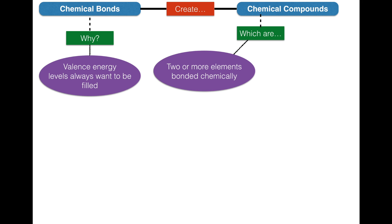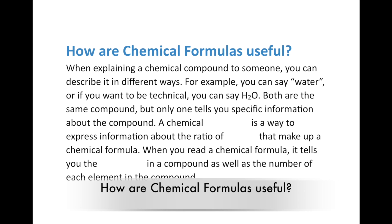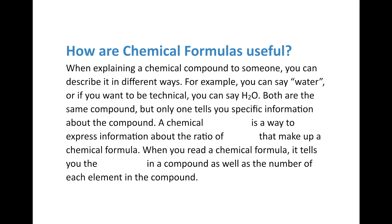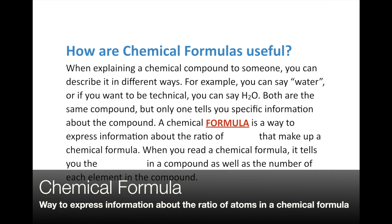Let's add to our graphic organizer: chemical bonds create chemical compounds, and chemical compounds are two or more elements bonded chemically. Now, when explaining a compound, you can say 'water' and we know what it is, or you can say H2O to be technical. Only one tells you specific information. What we use is a chemical formula — a way to express information about the ratio of atoms that make up a chemical compound.